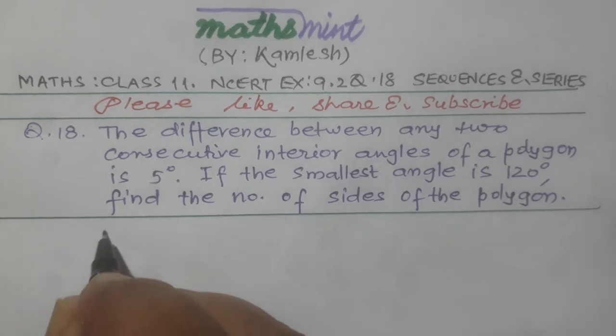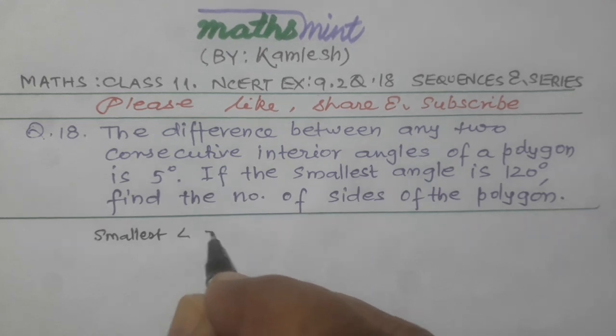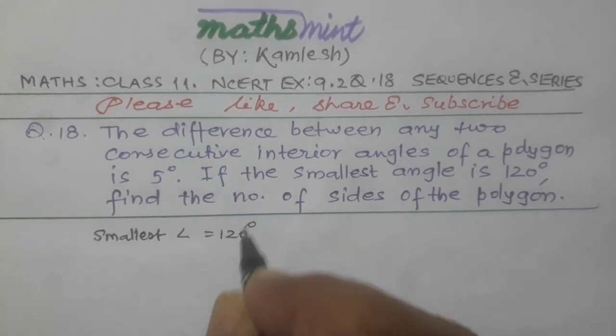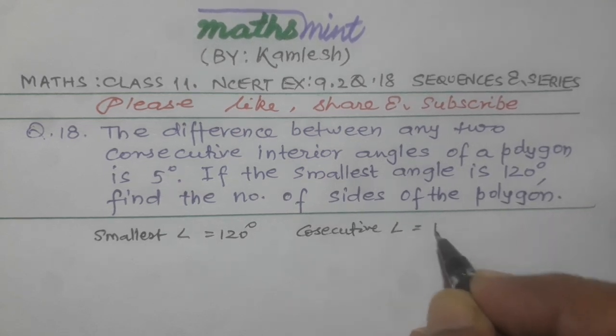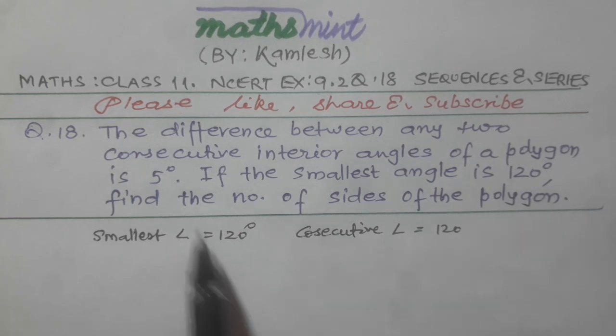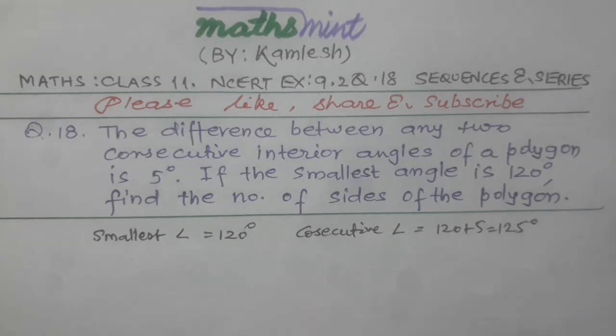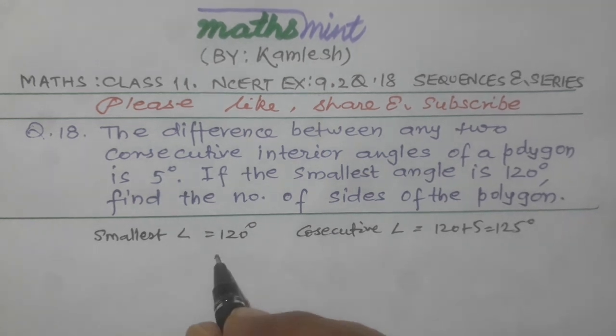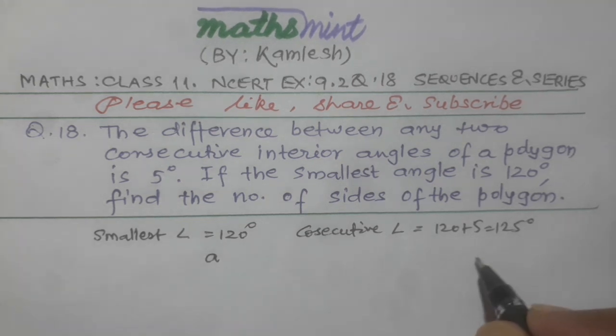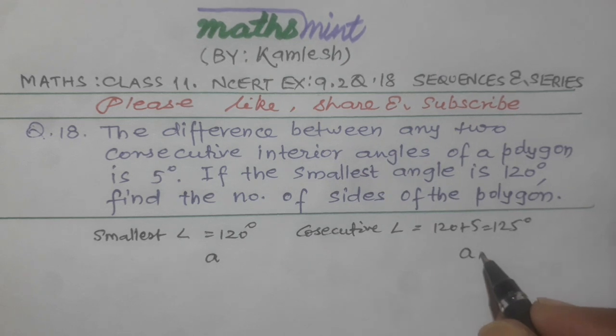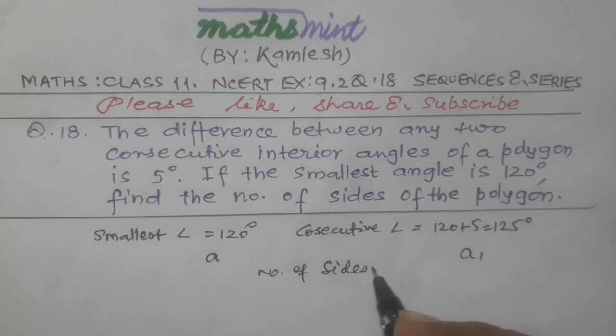By the question, smallest angle equals 120 degrees, consecutive angle equals 120 degrees, and difference is 5 degrees, so we are adding 5 here to get 125 degrees. The smallest angle became A of the arithmetic progression, and this became A1. Number of sides equals N.